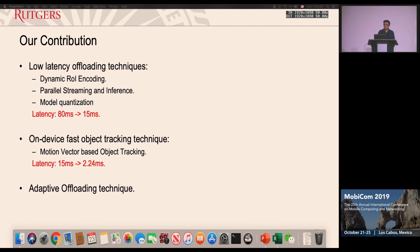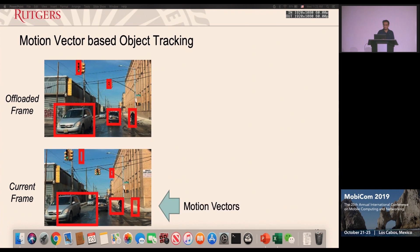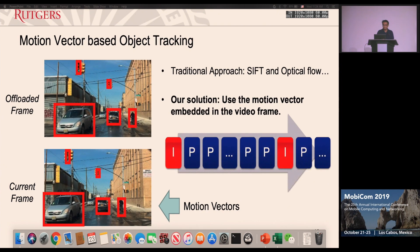To further reduce latency, we propose an on-device fast object tracking technique. The basic idea is to find a motion vector to shift the cached detection result to the current frame, avoiding inconsistency and motion sickness. Our solution uses motion vectors embedded in the video frame rather than traditional methods like SIFT or optical flow. We directly use motion vectors generated by the hardware-accelerated encoder, so we do not consume additional compute resources on the device.